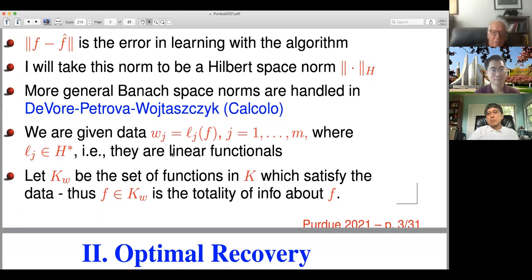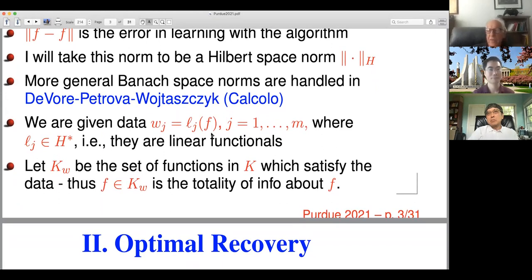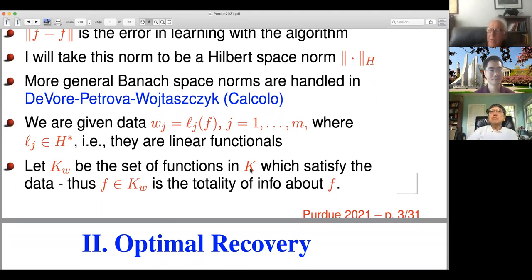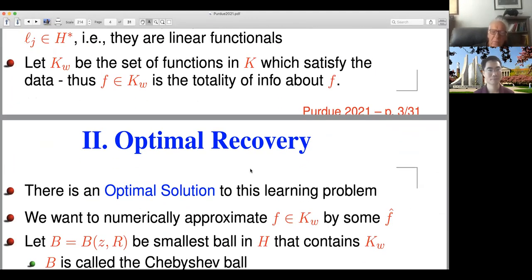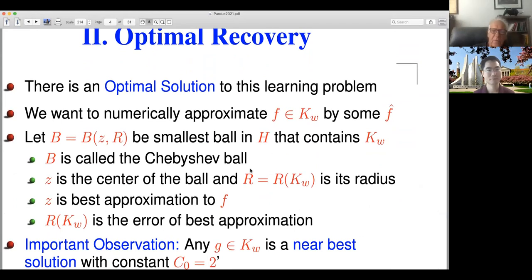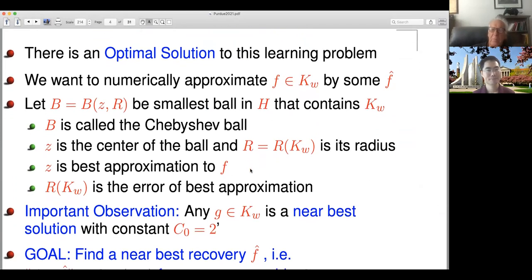What do I know about F? The totality of information I know about F is that it's in this model class K and that it satisfies the data. So I let K_w be the collection of all functions in K which satisfy the data — that is all I know about F. It could be any function in K_w as far as the information given to me. Given the setting, there is actually mathematically a very easy description of the best recovery that you can make — that is the best approximation F-hat you can give to F, given that F is any one of these functions in K_w.